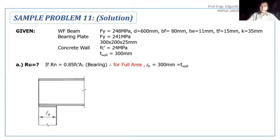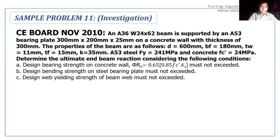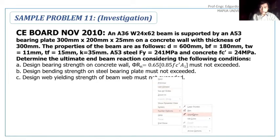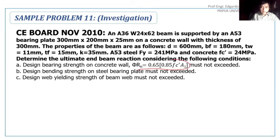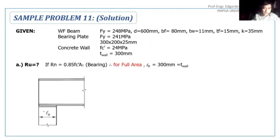It was given in the problem that the design bearing strength PRN is equal to 0.65 times 0.85 fc' A1. When the RN formula is like this, that means full area, because there's no square root of A2 over A1. This means the problem is saying that the bearing plate is resting on full area. If it's full area, the bearing plate dimension, whatever the LB is, should match the thickness of the wall.